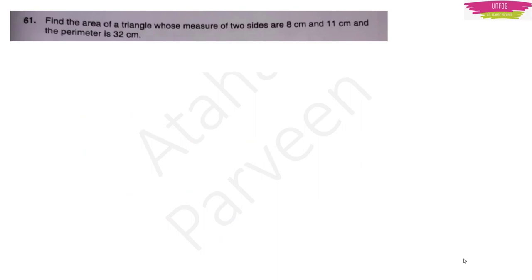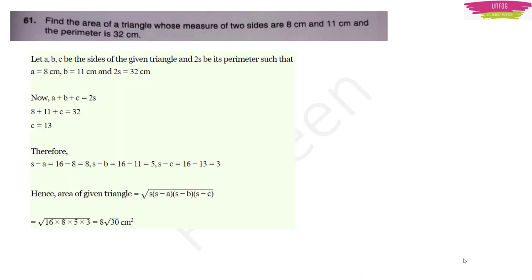Question 61: Find the area of a triangle with two sides 8 cm and 11 cm and perimeter 32 cm. The third side = 32 − 8 − 11 = 13 cm, and s = 32/2 = 16. Using Heron's formula: Area = √(s(s−a)(s−b)(s−c)) = 8√30 cm².